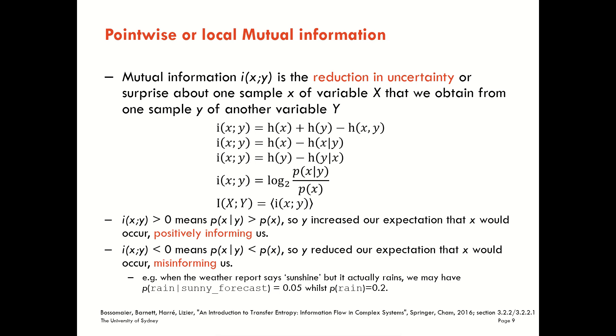Importantly, while we can have misinformation for any given realization, on average, over all samples in our ensemble, Y must provide non-negative information about X, as we already know.